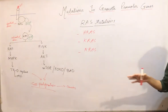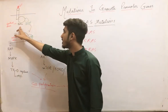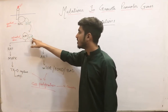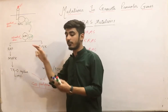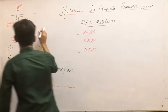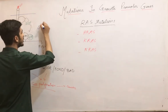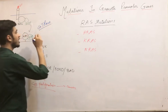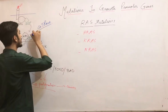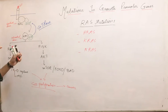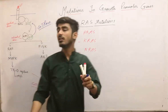Normally, when RAS is activated, it is coupled with GTP, converting it to the active form. To prevent over-proliferation or prolonged activation, there is a negative regulator — a GTPase — that normally converts GTP back to GDP.